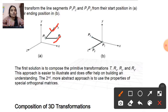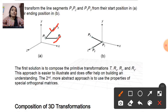This is our starting position and this figure shows the ending position. That means this one is our original position — our source position — and this is our destination position.